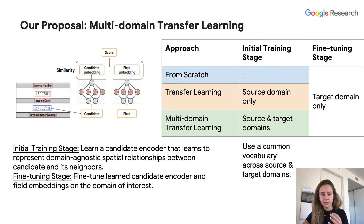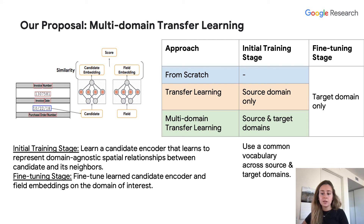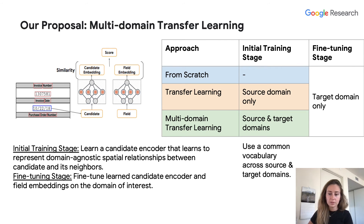A key observation is that the candidate encoder learns embeddings for the neighboring tokens, and these word embeddings, while agnostic to the field, are likely to be specific to the domain used for training. Therefore, at stage one, we combine extraction candidates from both source and target domains and use a common vocabulary across both domains while training GLEAN's ML-based score model. At stage two, we simply fine-tune both the candidate encodings and field embeddings on the target domain.